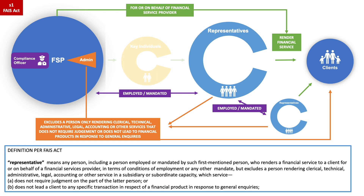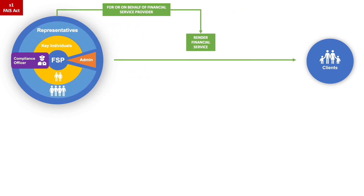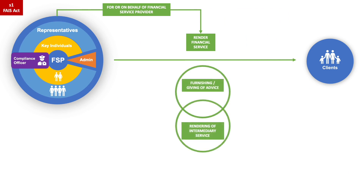What needs to be considered is that if a person only performs administration-related activities, they are not a representative. But as soon as the person provides or gives any advice to a client, then they are considered to be a representative, even if the advice arose while they were doing administrative tasks. Next, we look at the components that make up a financial service: firstly, the furnishing or giving of advice; secondly, the rendering of an intermediary service; and lastly, a combination of the two.